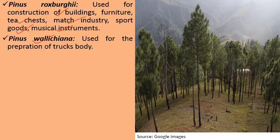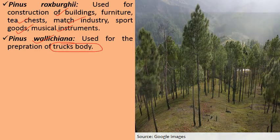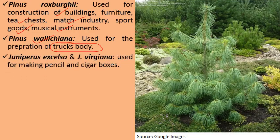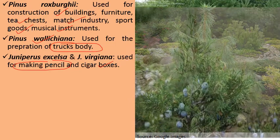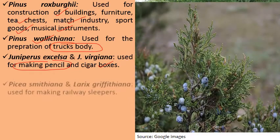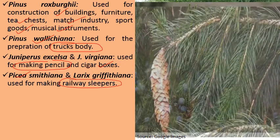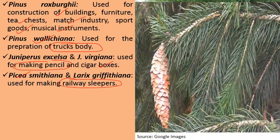Next is Juniperus excelsa and Juniperus virginiana, which are used for making pencils and cigar boxes. Next are Paissia samithiana and Larix griffithiana, which are used for making railway sleepers.